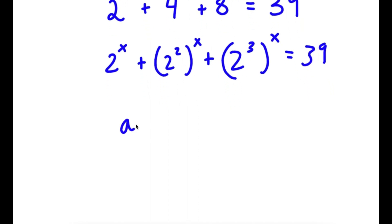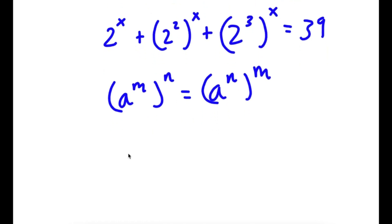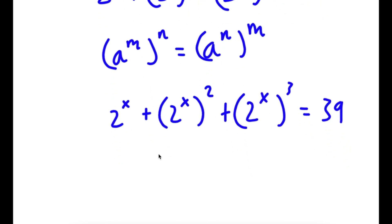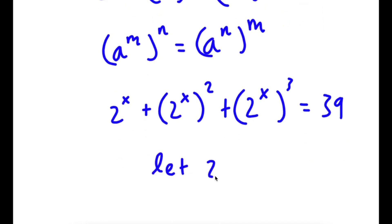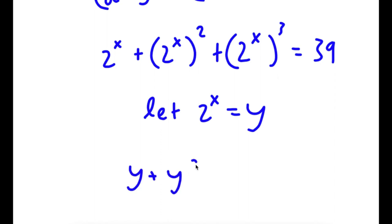If I have something in the form a to the power of m to the power of n, this is the same thing as a to the power of m times n. So 2 to the power of 2 to the power of x, I can rewrite as 2 to the power of x to the power of 2. And 2 to the power of 3 to the power of x, I can rewrite as 2 to the power of x to the power of 3. Now I'm going to let 2 to the power of x equal to the variable y.